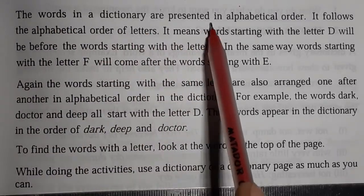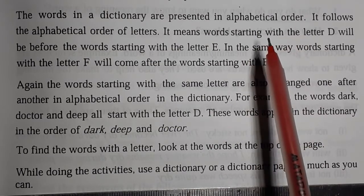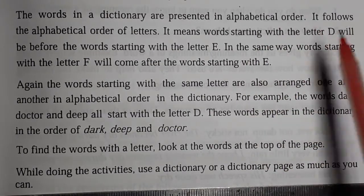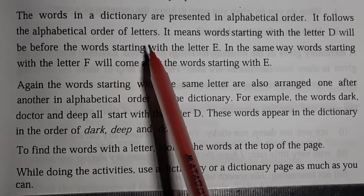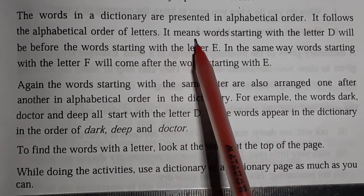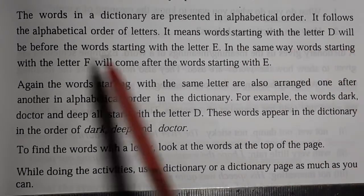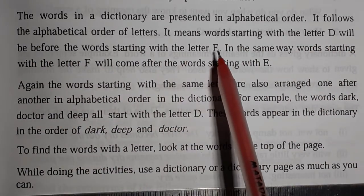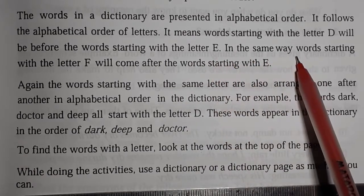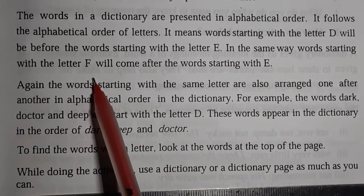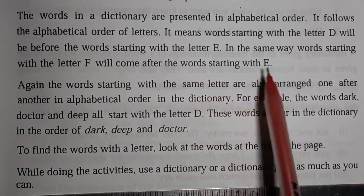The words in a dictionary are presented in alphabetic order. It follows the alphabetic order of letters. It means the word starting with the letter D will be before the word starting with the letter E. In the same way, the word starting with the letter F will come after the word starting with E.